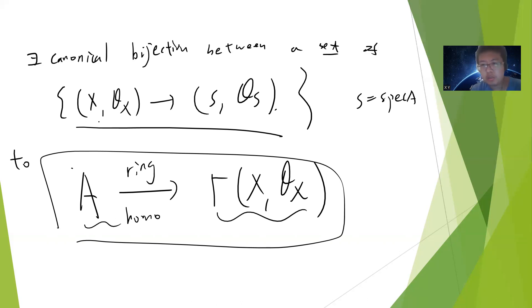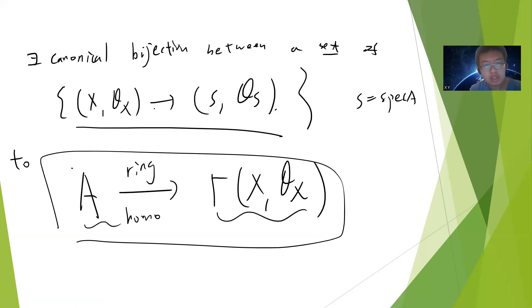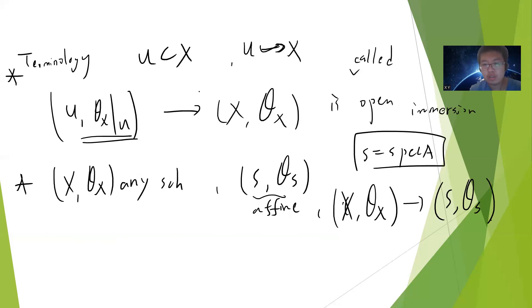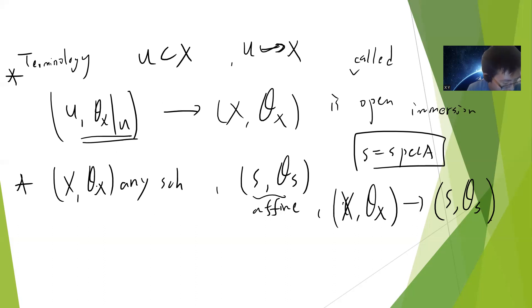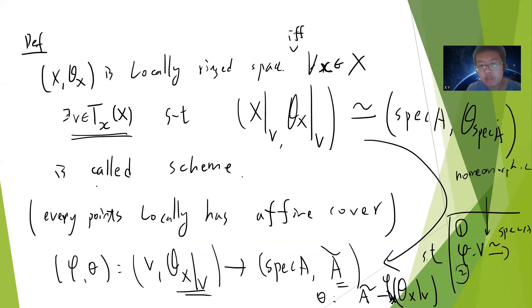Obviously if X is affine this should also be simple. This theorem is important and I will give the proof. It gives you a classification — at least part of the classification — of morphisms from a scheme to an affine scheme. In the future I can also talk about gluing of schemes and some other things. See you.